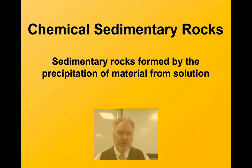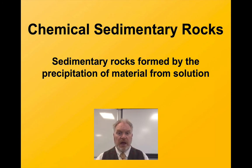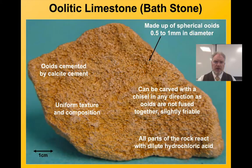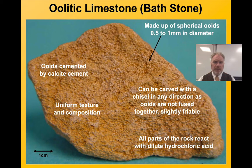Chemical sedimentary rocks are where we get precipitation of minerals from solution, and we get a few distinctive types. This is an oolitic limestone — this particular one is the stone that makes the buildings in Bath so famous. Here we have these little spherical balls of calcite, called ooids.